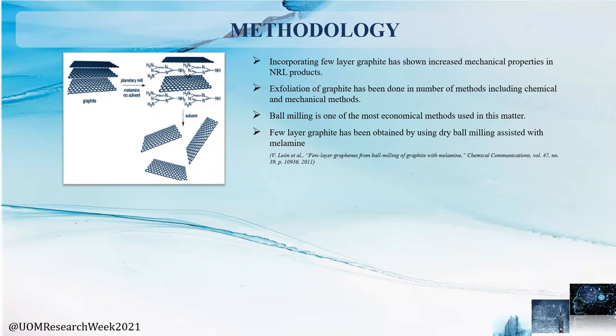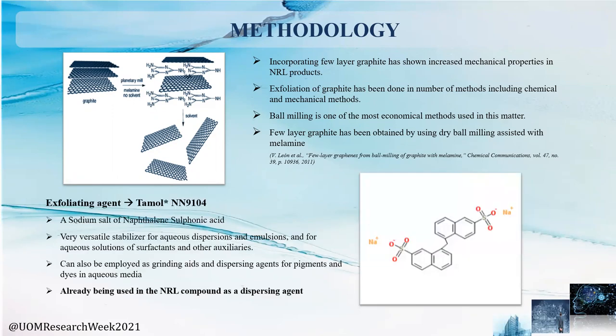As a result of our literature review, we found that ball milling is one of the most economical methods that can be used for this purpose. We also came across an attempt where melamine has been used as a grinding agent in dry ball milling-assisted exfoliation technique. After further considerations, we decided to use Tamol 9104 as the exfoliating agent in our process. Tamol is a sodium salt of naphthalene sulfonic acid, which is already being used as a dispersing agent in natural rubber latex film manufacturing. This fact guaranteed us that our final exfoliated graphite will be easily compatible with natural rubber latex.